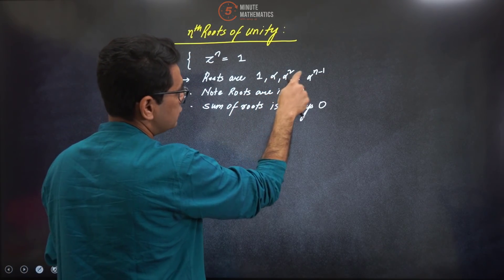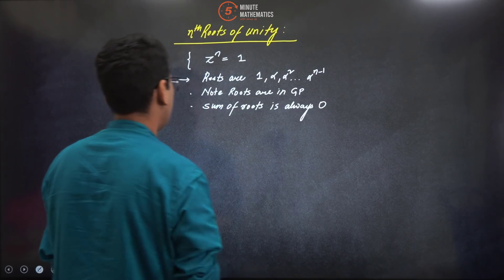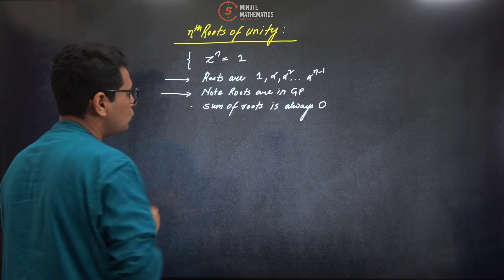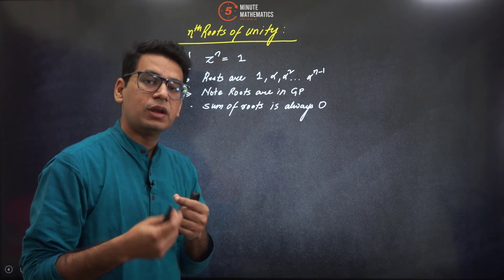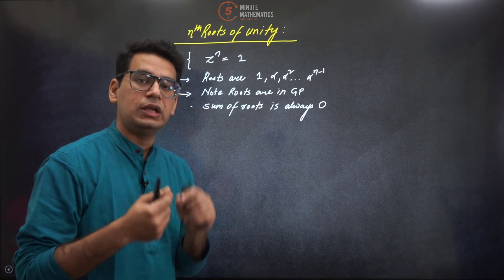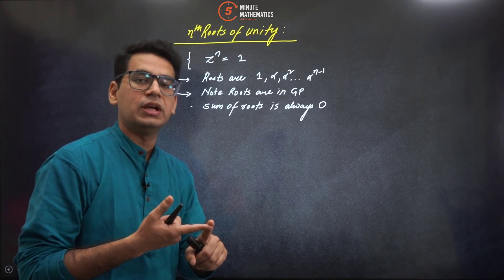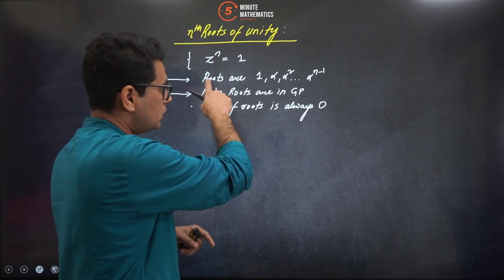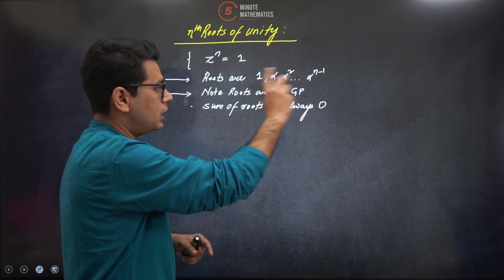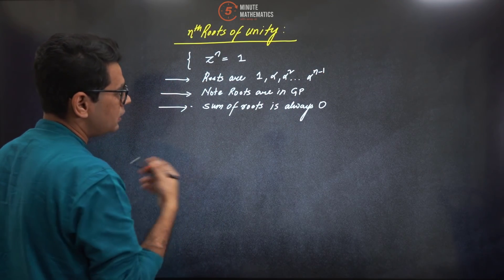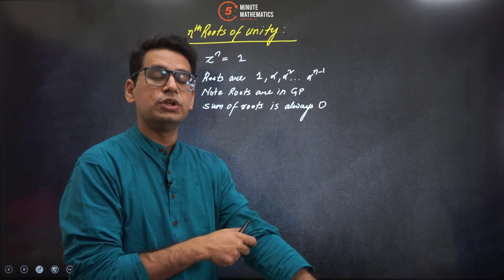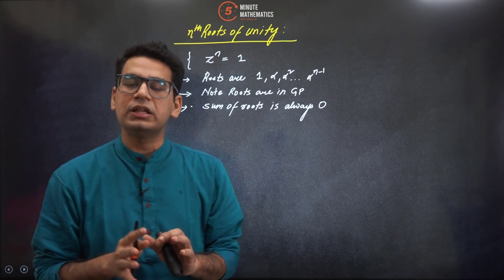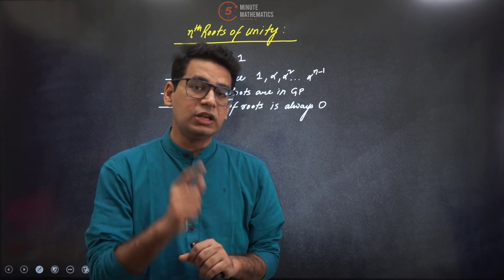The roots are written like this: one, alpha, alpha square, and so forth. The important part is that the roots of unity are always in GP. For example, you can remember this with the help of cube root of unity: one, omega, omega square - they are also in GP. Also, the important property is that their sum is always zero. That is, one plus alpha plus alpha square is always equal to zero.